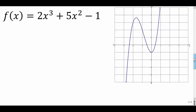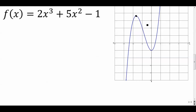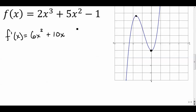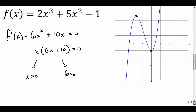Next example: a cubic function. We can see one critical point here and one here. Let's find the derivative: three times two is six, so six x squared plus ten x. Set it equal to zero and factor out x: x times six x plus ten equals zero. So x equals zero, and from six x plus ten equals zero, x equals negative five over three.